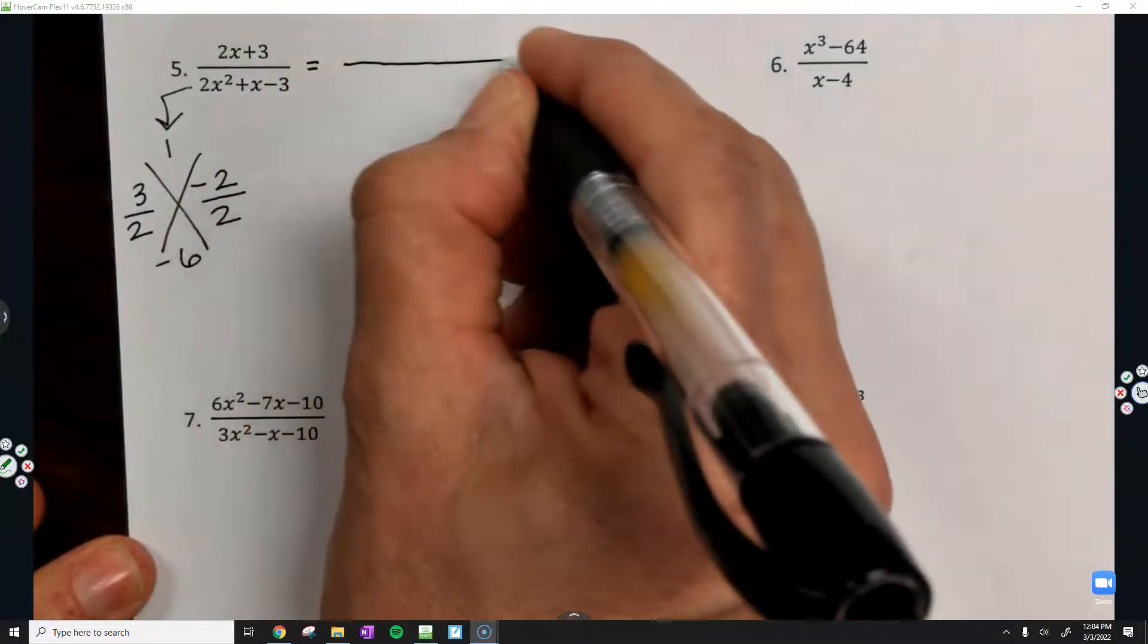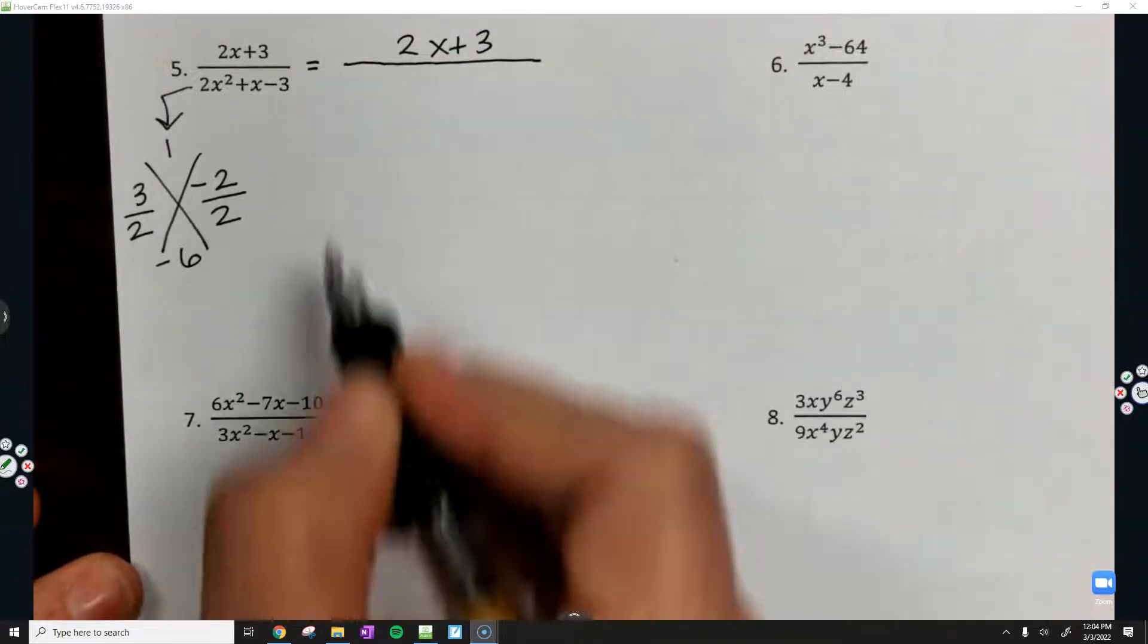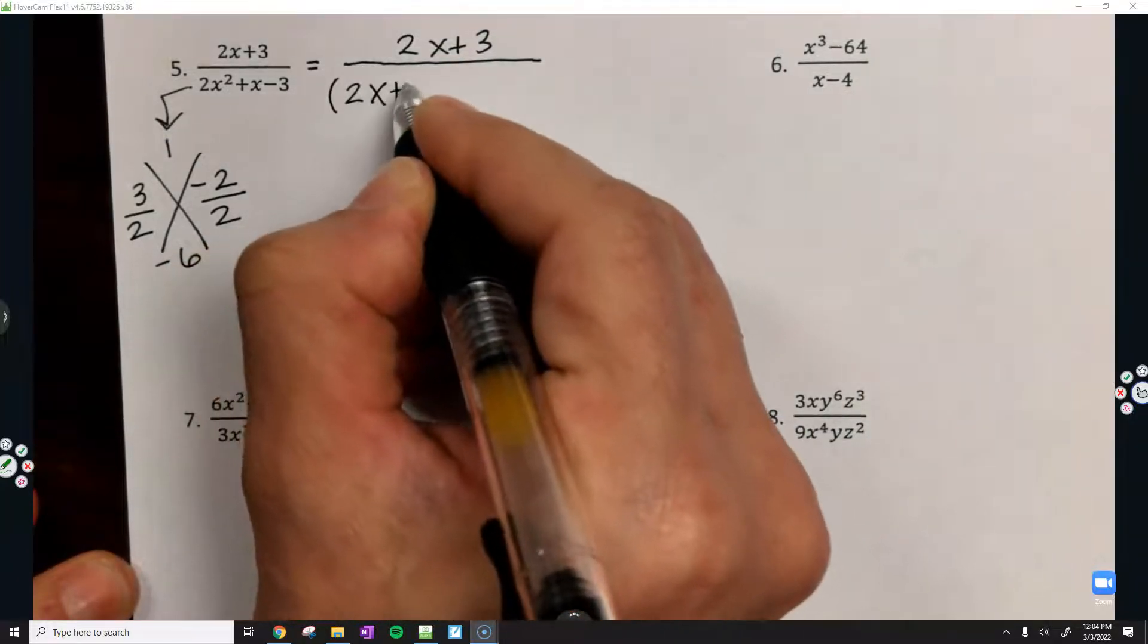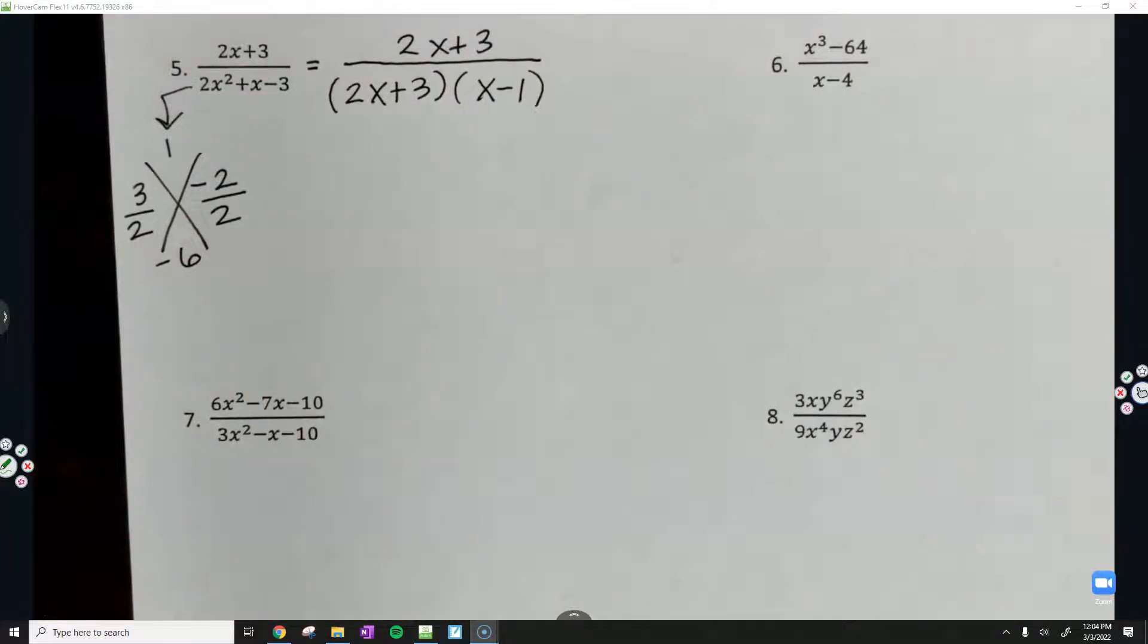Just recopy in the numerator. The denominator is going to be 2x plus 3 and then x minus 1. Any questions on those factors?